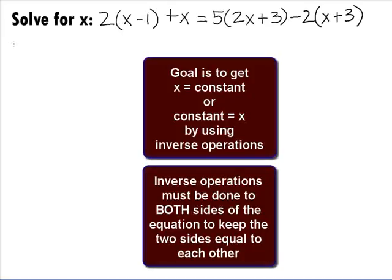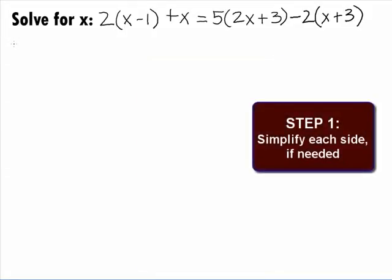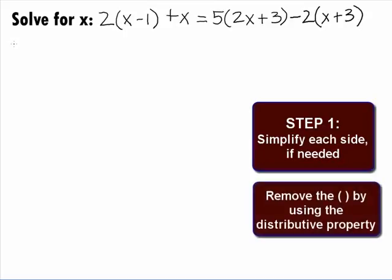It looks like x is on both sides of this equation and it is not by itself. In Step 1, we want to simplify each side if needed. It looks like we have some parentheses that can clear out, so it will make our problem a little nicer to work with. We can do this by applying the distributive property.